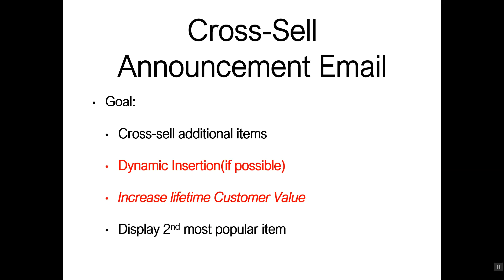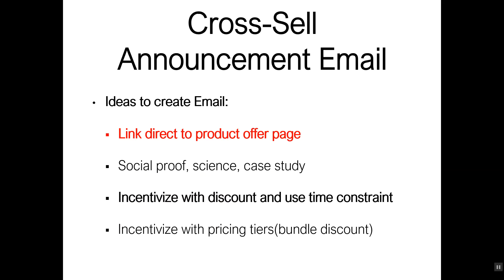Or you can set up two separate funnels: if a person buys product A, next they get shown product B; if a person buys product B, they get sent product A. This is going to increase the lifetime customer value, and you're displaying your second most popular item.